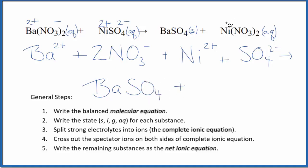And then we said we had a 2+, and then a 1-, so we have the nickel 2+ ion again, and then we have 2 of these nitrates, so 2NO3⁻.